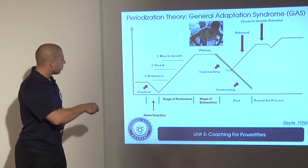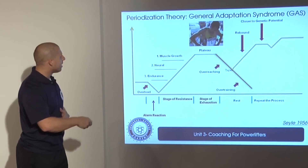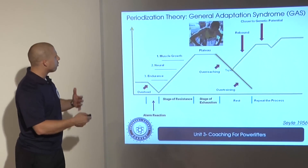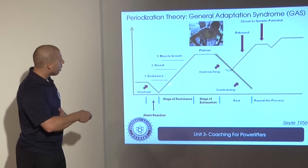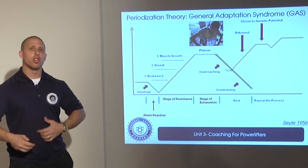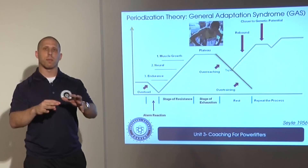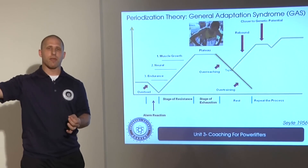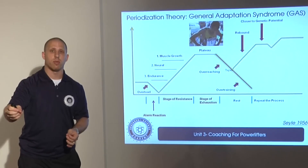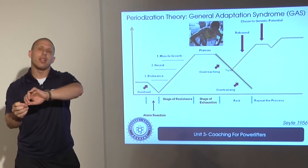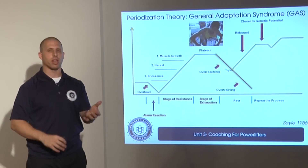The stage of resistance means you've recovered from this initial overload and now, whatever you're training for — in this case usually neural gains or muscle growth — your body can handle more training. Your body's adapting, you're getting the progress that you trained for. So after an overload, if it's a novel stimulus, you go into the alarm reaction, then you recover into the stage of resistance and you can handle more training.